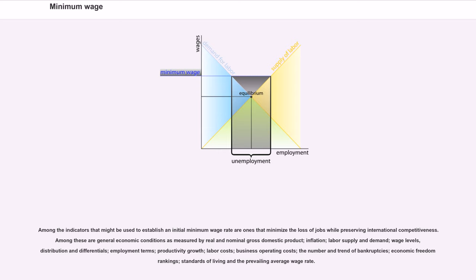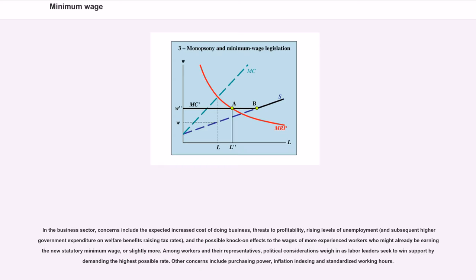Among the indicators that might be used to establish an initial minimum wage rate are ones that minimize the loss of jobs while preserving international competitiveness. Among these are general economic conditions as measured by real and nominal gross domestic product, inflation, labor supply and demand, wage levels, distribution and differentials, employment terms, productivity growth, labor costs, business operating costs, the number and trend of bankruptcies, economic freedom rankings, standards of living, and the prevailing average wage rate.